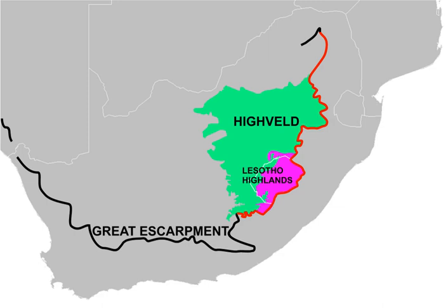Naturally occurring vegetation in the Heiveld consists of different types of well-established grassland depending on the varying amounts of rainfall across the area — subtropical and temperate grassland — with true savanna not dominating the ecosystem until more tropical latitudes. The major grass species are Hyparrhenia hirta and Sporobolus pyramidalis, and among these are other grasses and herbs. Trees and shrubs never thrived due to the frequent fires that occurred in the dry season and the heavy grazing, once by wild animals and now by livestock.